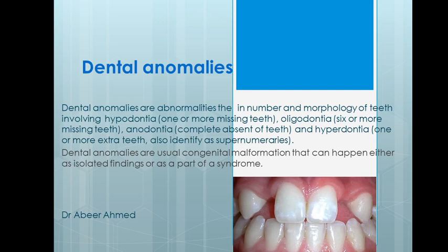The first type is hypodontia — when a patient has one or more teeth missing. Oligodontia is when a patient has six or more missing teeth. Anodontia means the patient has a complete absence of teeth. Hyperdontia means a patient has one or more extra teeth, also called supernumeraries — the same tooth appearing twice.